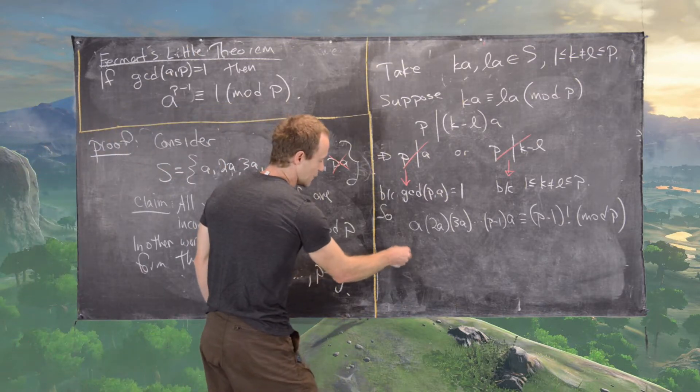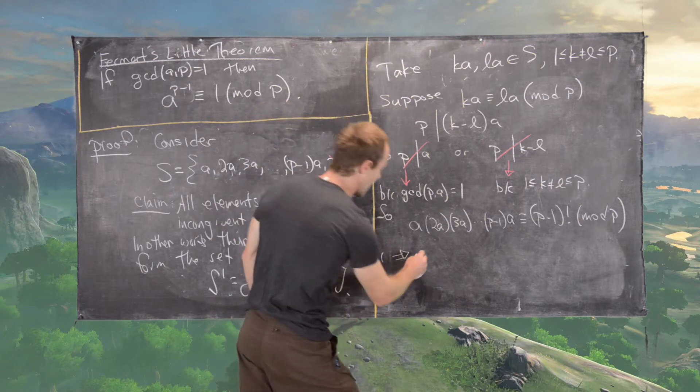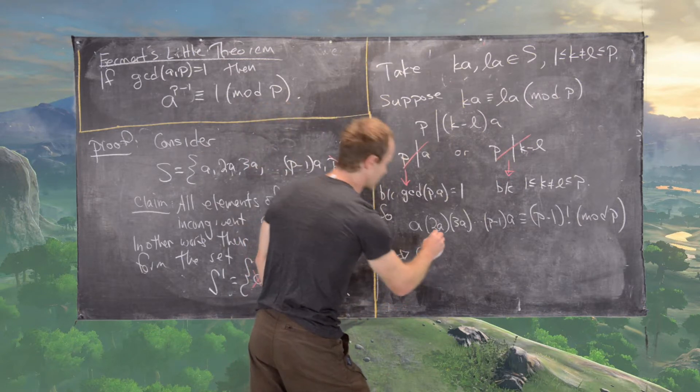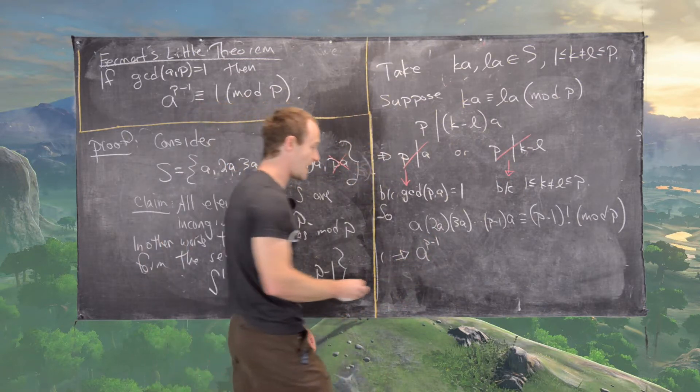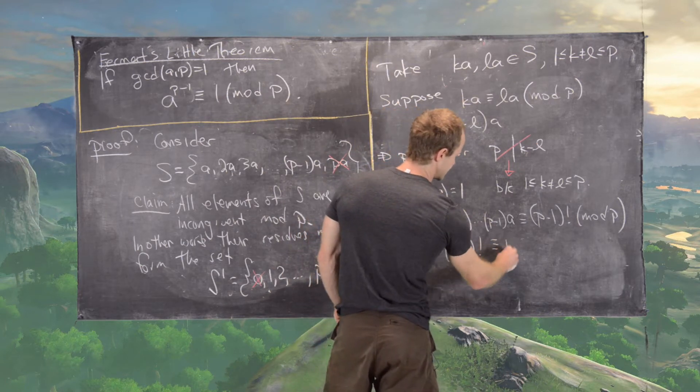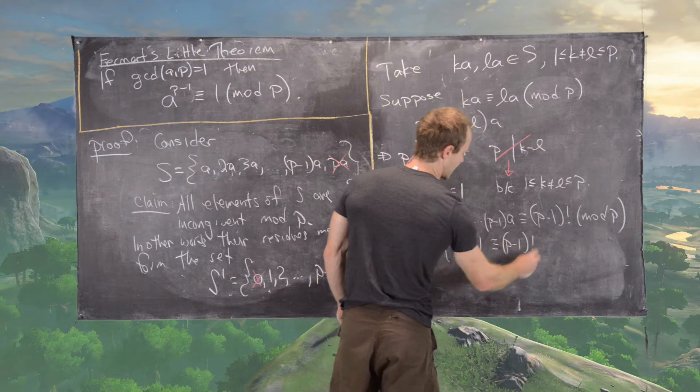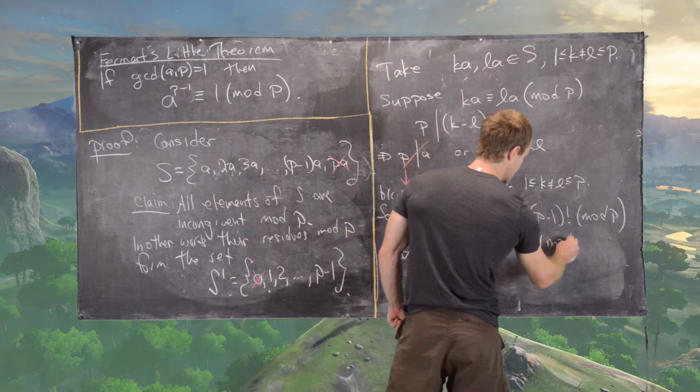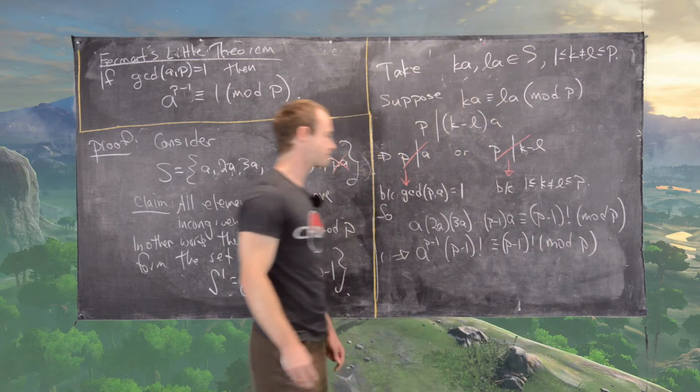So now let's see what's left over. This gives us A to the power P minus 1 times another P minus 1 factorial, which is congruent to P minus 1 factorial mod P.